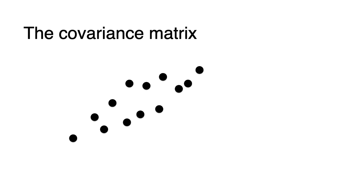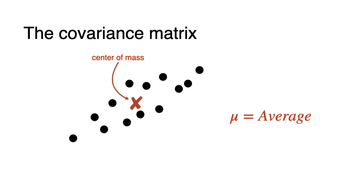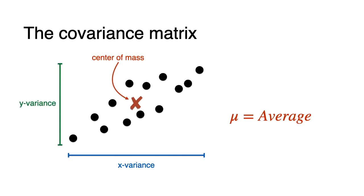The first one is the center of mass. The center of mass is the point where you would balance this dataset if every point was an equal weight. We also call it the mean or the average. Then we also have the x-variance, which tells us how much this dataset is spread in the horizontal direction, and the y-variance, which tells us how much the dataset is spread in the vertical direction. This dataset is a little more spread in the horizontal than in the vertical direction, so we expect the x-variance to be higher than the y-variance.